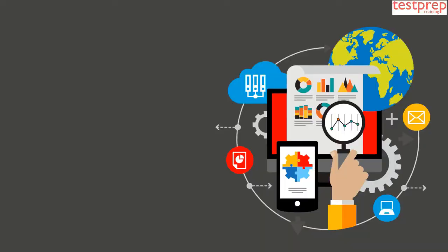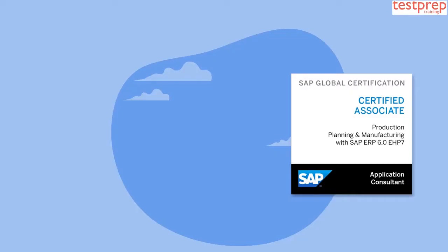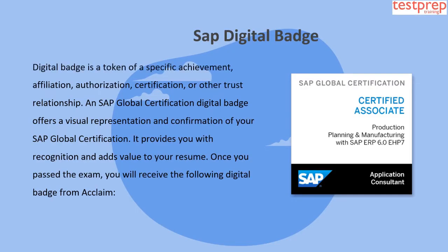Welcome to Test Prep Training. Today we will discuss the Certified Application Associate - Production Planning and Manufacturing with SAP ERP 6.0 EHP 7. This exam validates your knowledge in the area of production for the consultant profile.